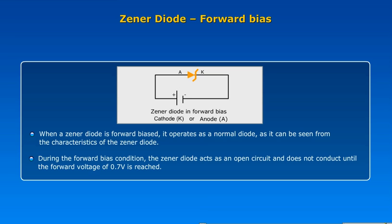During the forward bias condition, the Zener diode acts as an open circuit and does not conduct until the forward voltage of 0.7V is reached.